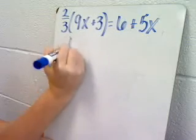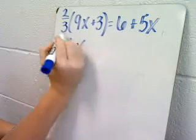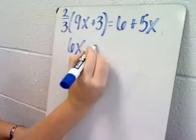Well, 2 thirds of 9 would be 6, and 2 thirds of 3 is 2.